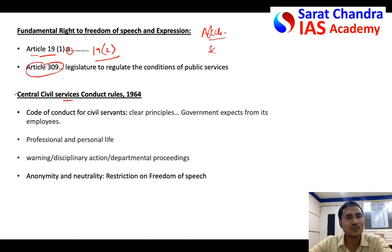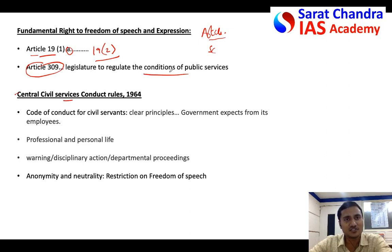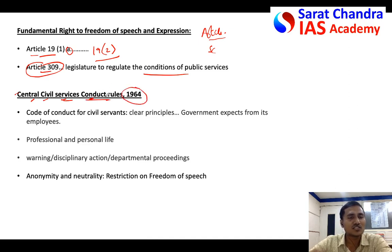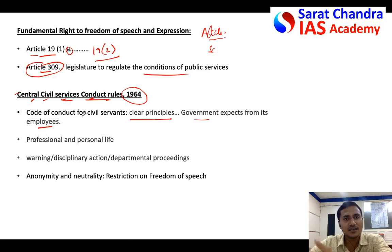Article 309 allows Parliament to make a law on how to appoint civil servants as well as regulate their service conditions. Using Article 309, Parliament made the Central Civil Services Conduct Rules in 1964. These rules are clear guidelines of what the government expects from its civil servants — government's employees — and it is clearly mentioned in the conduct rules what is expected.